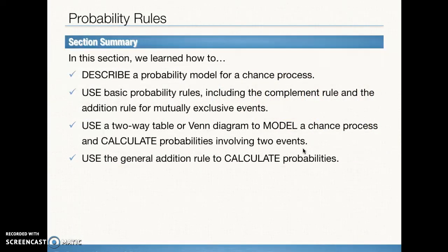Taking a look at our section objectives: we did learn how to describe a probability model for a chance process — remember, each individual probability must be between 0 and 1 and the model must total 100%. We need to use basic probability rules including the complement rule and the addition rule for mutually exclusive events. We want to go back and forth between the two-way table and the Venn diagram, and last of all, use the general addition rule for non-mutually exclusive events. That is it for Section 2 — I will see you back for Section 3.